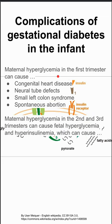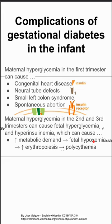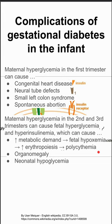You get different complications in the second and third trimester. Maternal hyperglycemia can cause fetal hyperglycemia and fetal hyperinsulinemia. The result of this is that baby will have increased metabolic demand, which can lead to fetal hypoxemia, increased erythropoiesis in the fetus, and polycythemia in the fetus. Baby can also get organomegaly, and you can have neonatal hypoglycemia after baby is born.